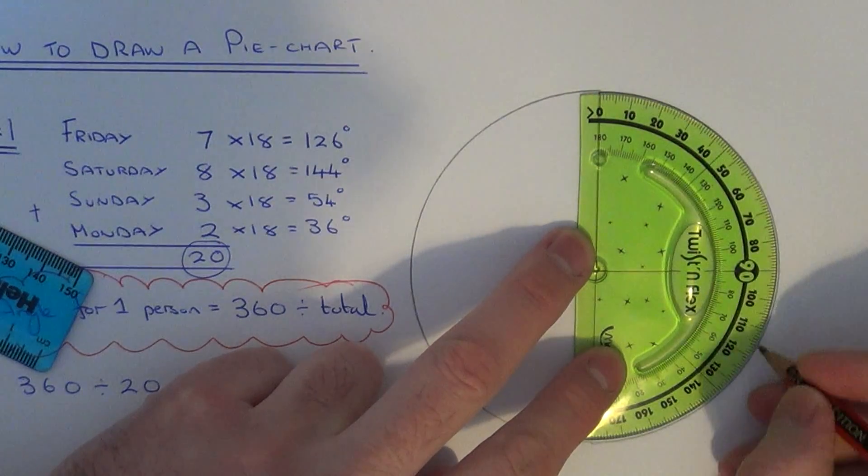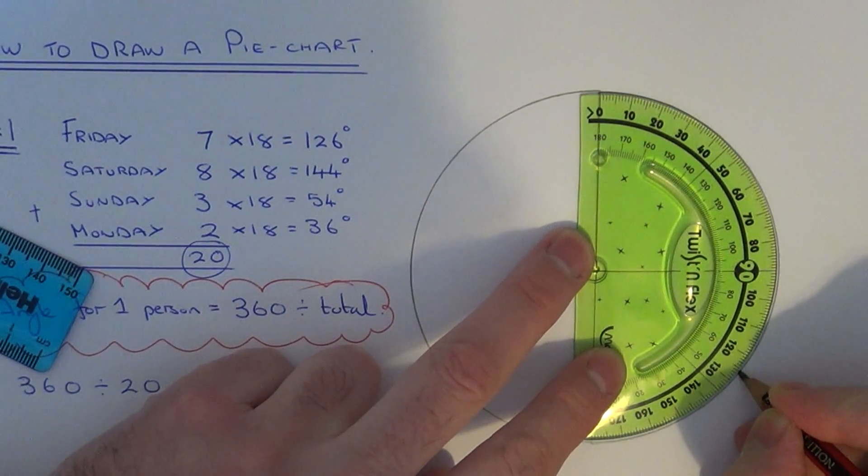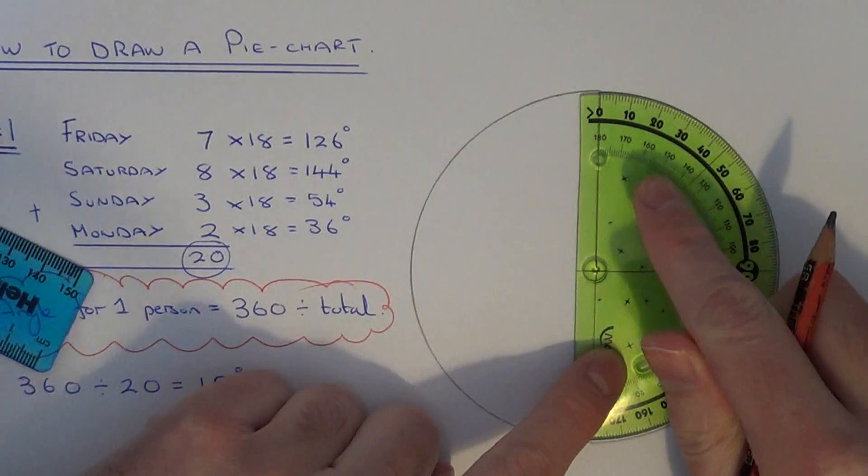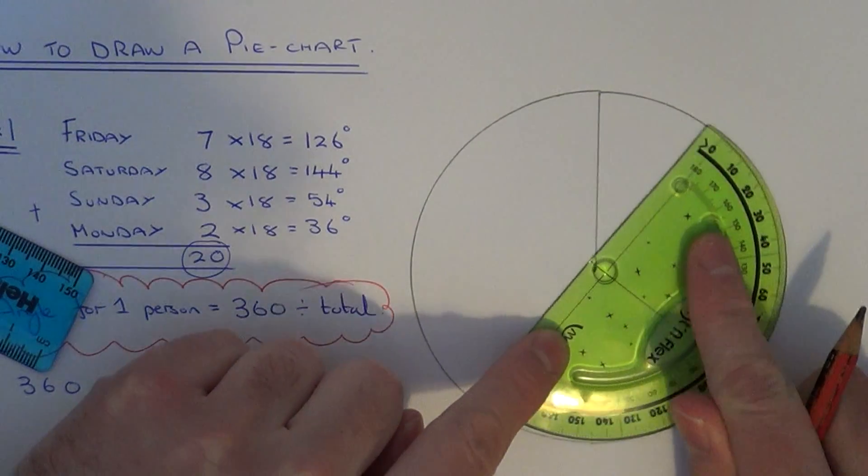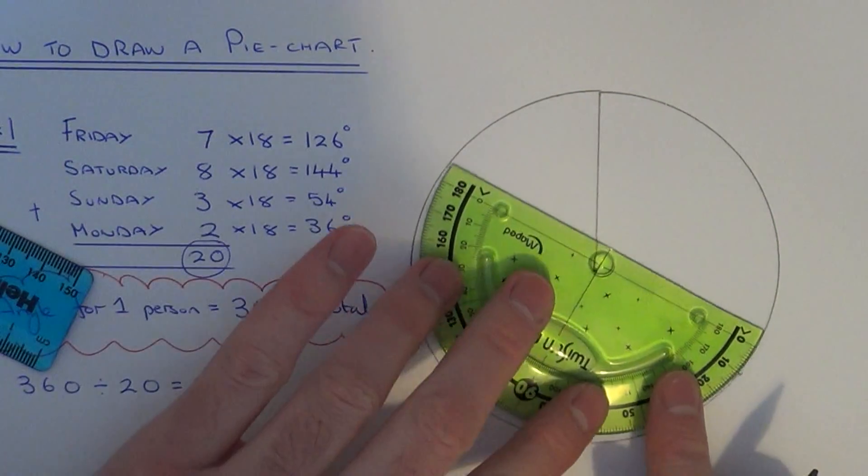So 126, if you follow it around on the outside, let's put a marker here. Now let's just turn our protractor and measure the next angle.